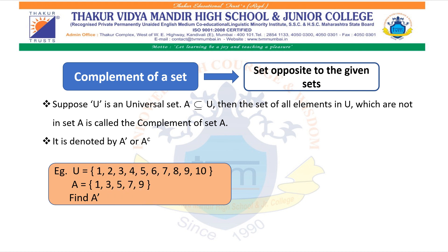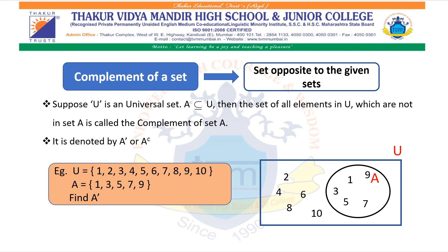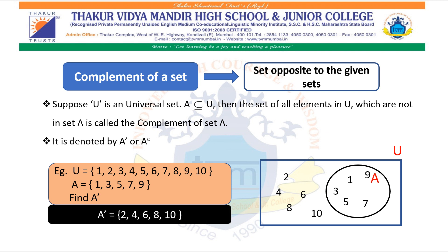Let us see one example. U is the set of first natural numbers, A is a set of {1, 3, 5, 7, 9}, and we have to find A complement. In the Venn diagram, a rectangle represents the universal set and an oval or circle represents set A. The elements which are not in A but are present in U are 2, 4, 6, 8, 10 — these will be the elements of A complement. Therefore, A complement is the set {2, 4, 6, 8, 10}.